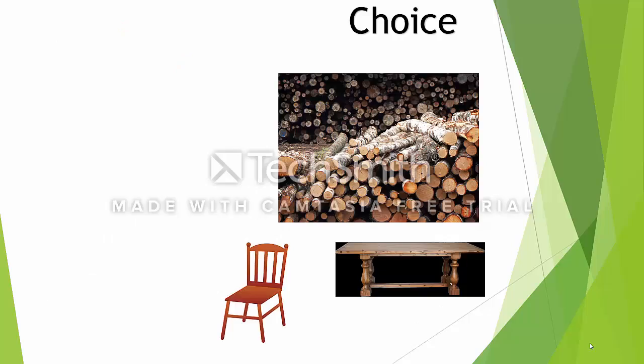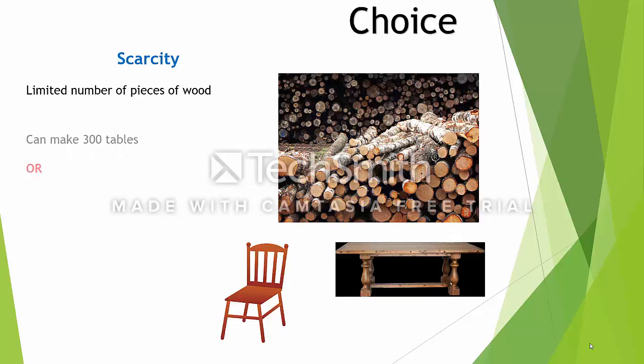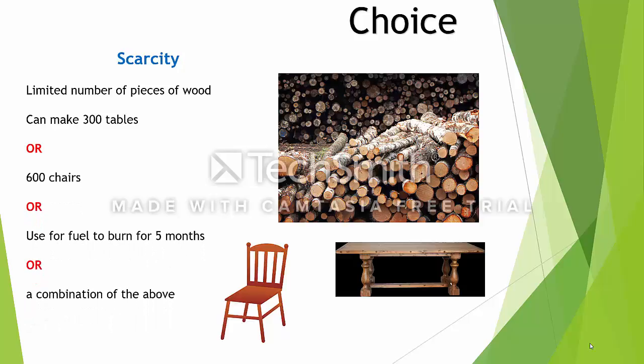Choice is the critical part of economics, and we establish this because of the condition of scarcity that exists in economics. Pretty much everything is scarce. If you click back to the first video, we looked at a limited number of pieces of wood. Let's assume we've got a limited number of pieces of wood, and in our economy we can make either 300 tables or 600 chairs, or use that wood to burn for fuel to keep us warm or to produce light for five months, or we can do a combination of all of the above.